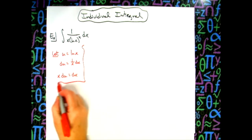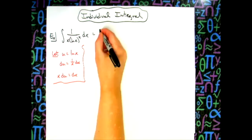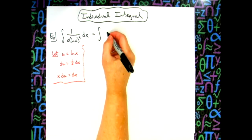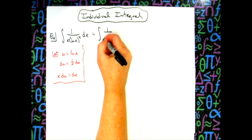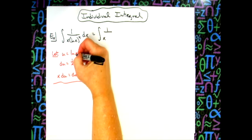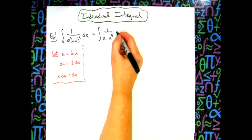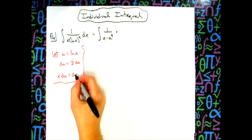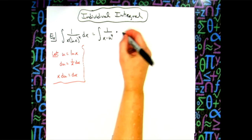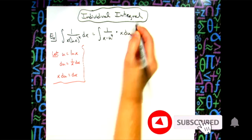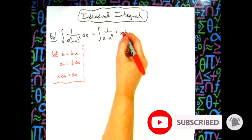Coming back up now to my original integral, I'll have the integral. The one's going to stay the same. I'll have an x. I'm going to replace natural log of x with my u, so I'll have u to the 4. Replacing dx now with x du, that's going to let that x and x cross out.